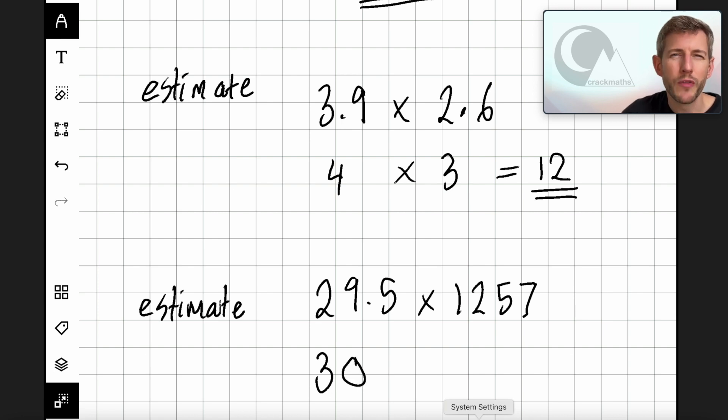Now let's look at this, 1257. Now a temptation that I always see people doing is to round a larger number to two significant figures. So a lot of people would want to round this to 1300. But that is not correct. We need to round it to 1000.